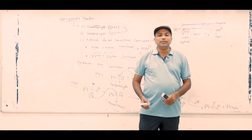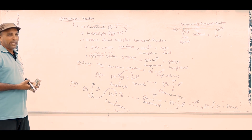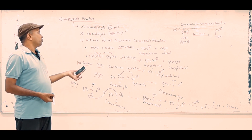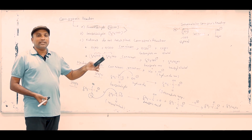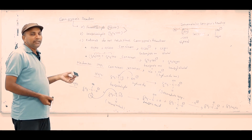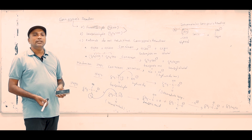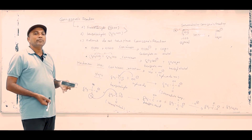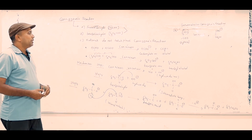This is a disproportionation reaction of Cannizzaro's reaction. Disproportionation means one particular species or compound gets oxidized and another gets reduced — both simultaneously. Such reactions are called disproportionation reactions. Cannizzaro's reaction is the best example of a disproportionation reaction.